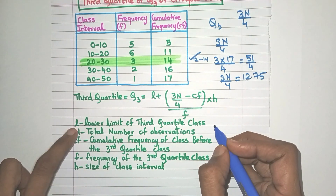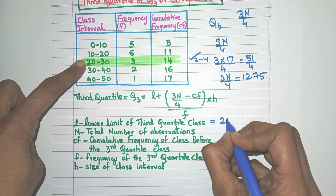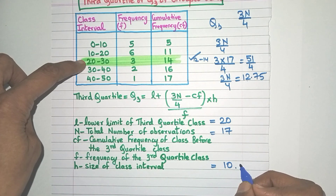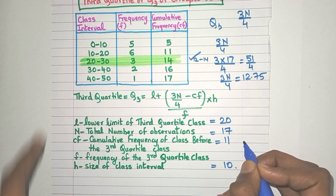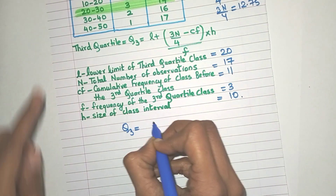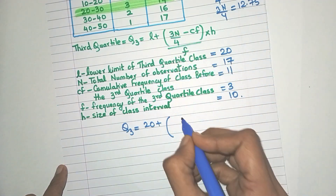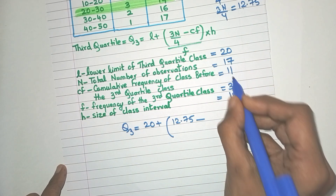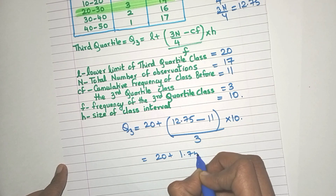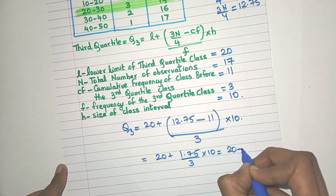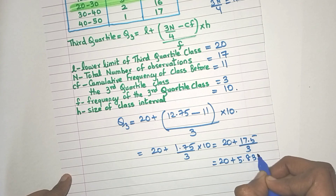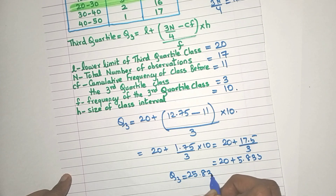Let me highlight the third quartile class. L, the lower limit, is 20. n is 17, and class size is 10. CF of the class before the third quartile class is 11. The frequency of the third quartile class is 3. Substituting: Q3 = 20 + (12.75 − 11) / 3 × 10 = 20 + 1.75 / 3 × 10 = 20 + 17.5/3 = 20 + 5.833 = 25.833.